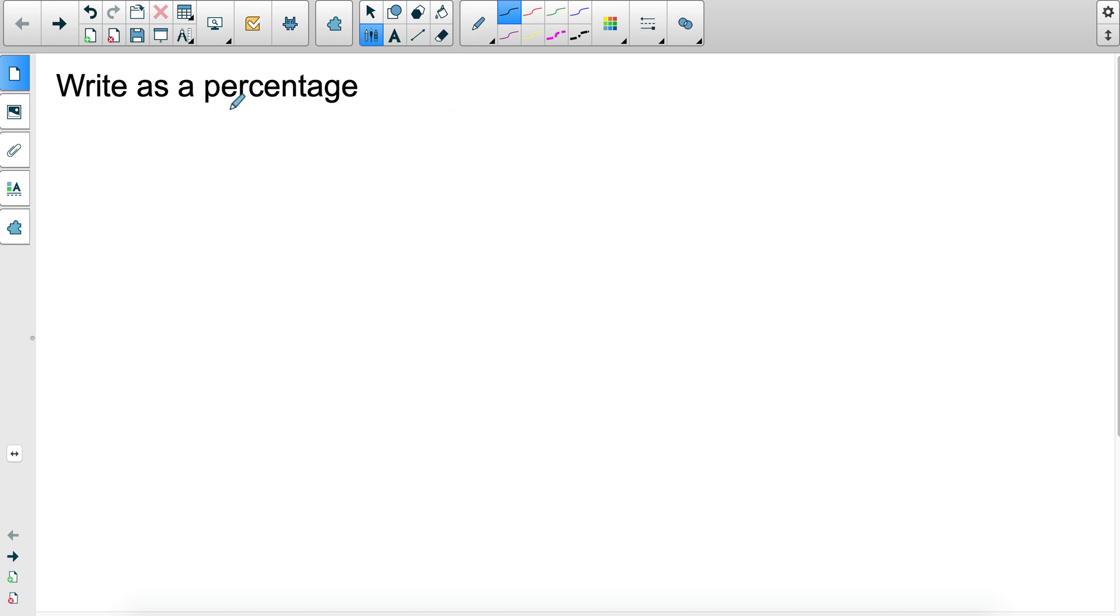So percentage, as you know, is something written out of a hundred. So you can write any number as a percentage, any number represented as a hundred. It could be written as a fraction, something over a hundred, so that would be 5 over 100, or the more shortened way of writing it would be 5%.